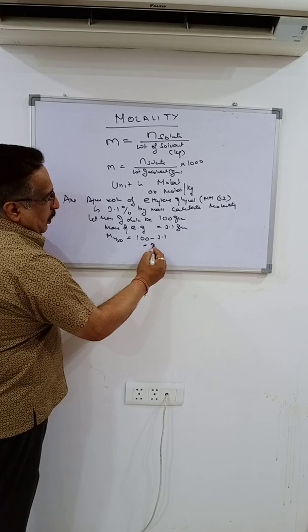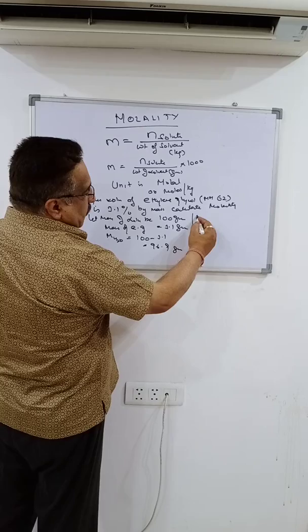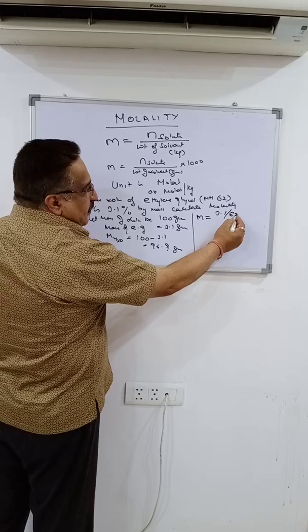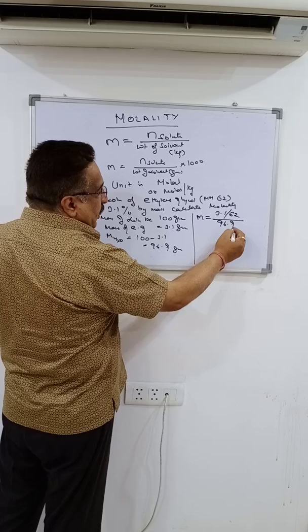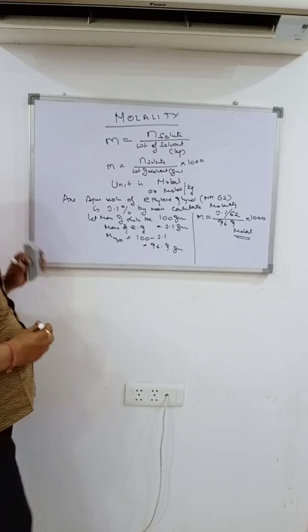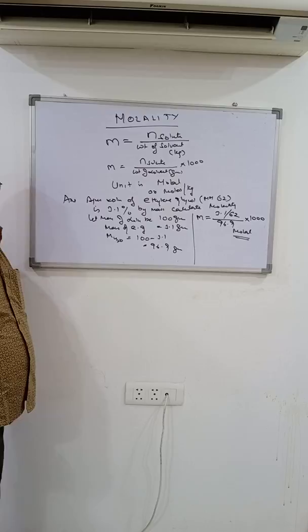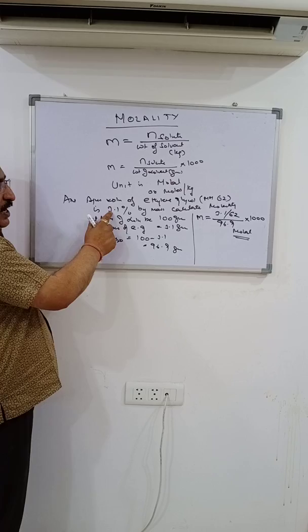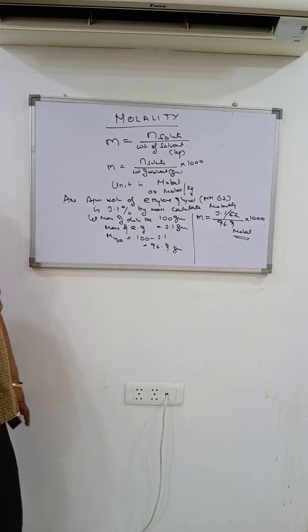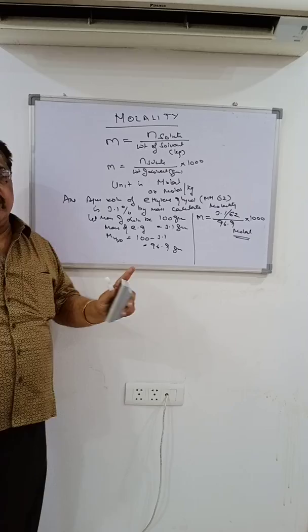Molality equals number of moles of ethylene glycol divided by weight of water in grams divided by 1000. That is 3.1/62 upon 96.9/1000. The main stress is on translating the percentage by mass into chemistry: 3.1 grams of ethylene glycol is dissolved in 100 grams of solution, so subtract mass of solute from mass of solution to get mass of solvent.